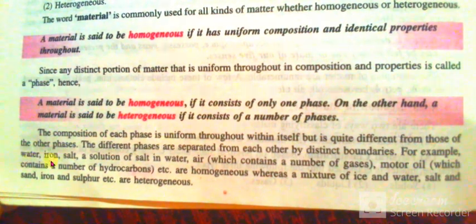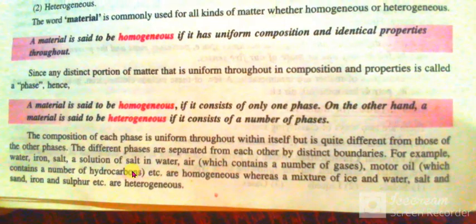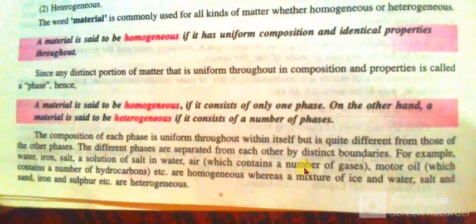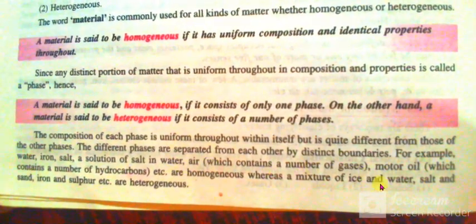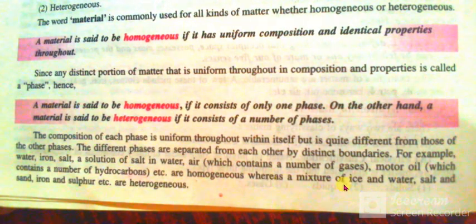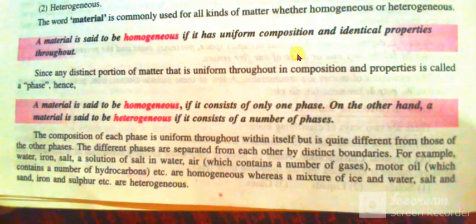For example, water, iron, salt or solution of salt in water, air which contains a number of gases, and motor oil which contains a number of hydrocarbons are homogeneous, whereas a mixture of ice and water, salt and sand, and iron and sulfur are heterogeneous.